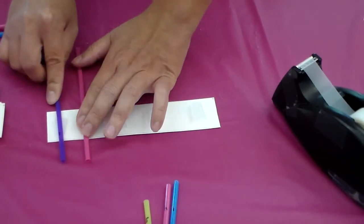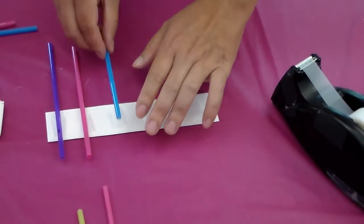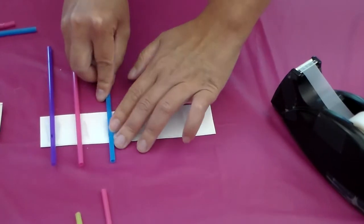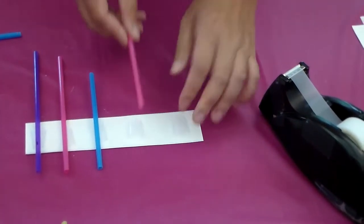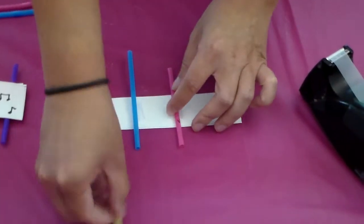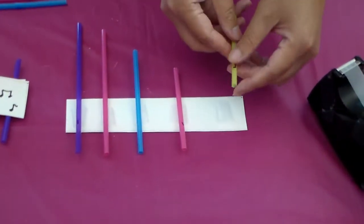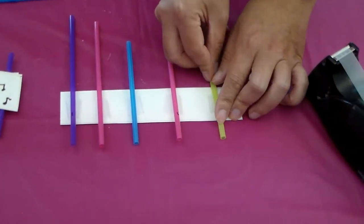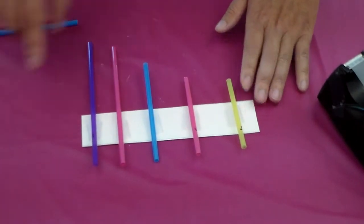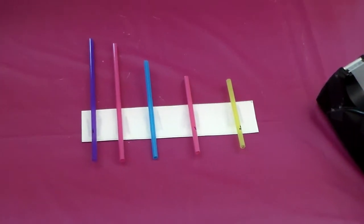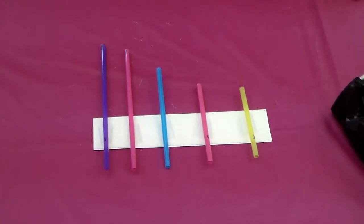that and then the third one like so, fourth one and then the tiniest one, the fifth one like that. So you should have all five straw lining up together like that with corresponding the length.